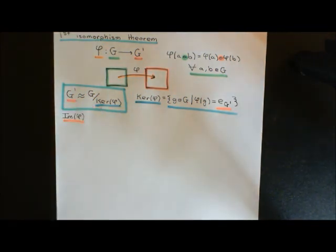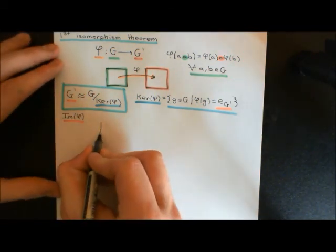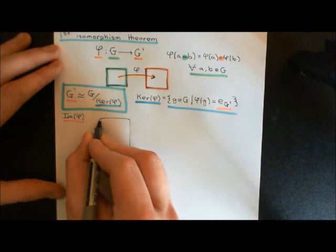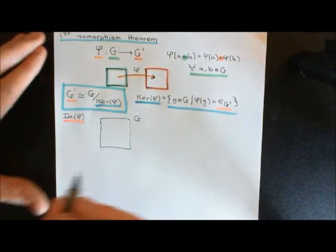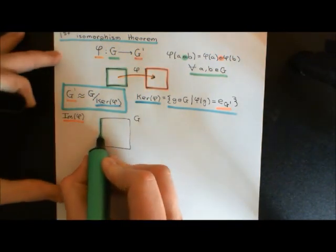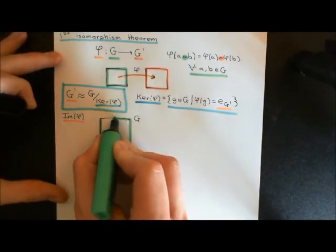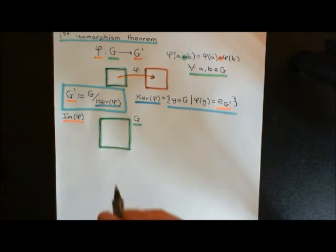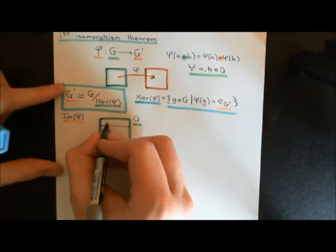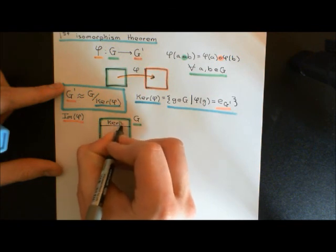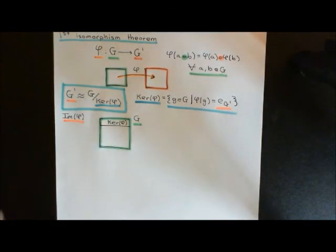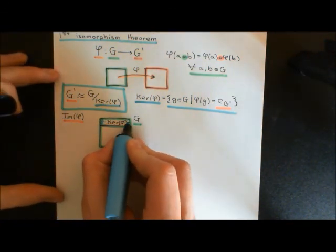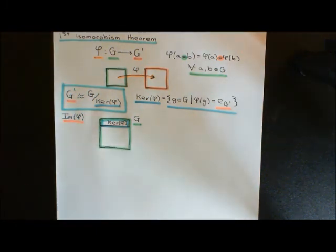We proved in the video on group homomorphisms that the kernel is a subgroup, and in fact it's actually a normal subgroup. So we can use this to quotient out our domain group. Drawing a picture: the domain group capital G is here in green, and the kernel of the homomorphism is a subgroup of G — all the elements of the domain group which are mapped onto the identity in the codomain group by phi. And it's actually forming a normal subgroup.